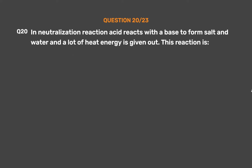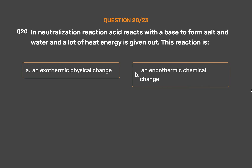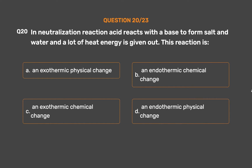Question number 20. In a neutralization reaction, acid reacts with a base to form salt and water, and a lot of heat energy is given out. This reaction is — Option A: An exothermic physical change. Option B: An endothermic chemical change. Option C: An exothermic chemical change. Option D: An endothermic physical change. The correct answer is Option C: An exothermic chemical change. It is exothermic (heat evolved) and a chemical change (new substance formed).